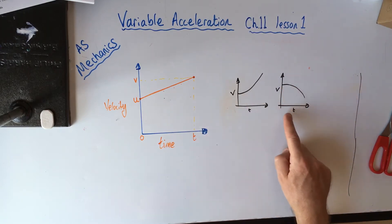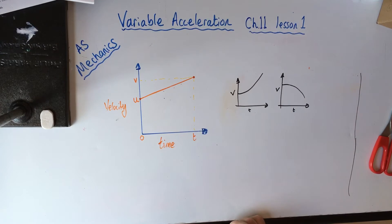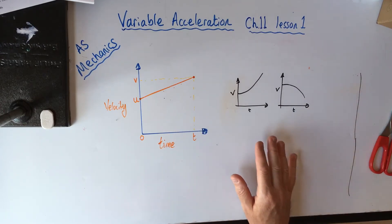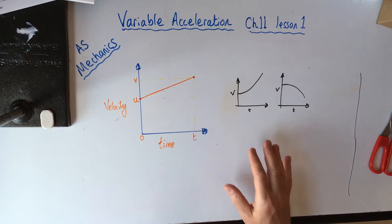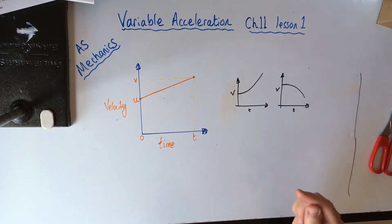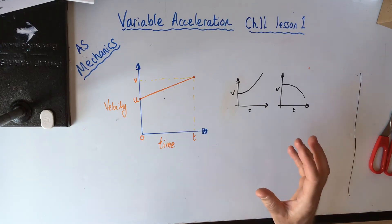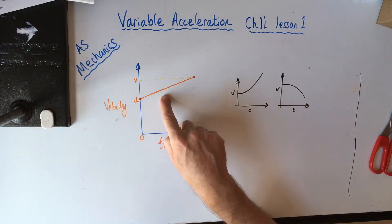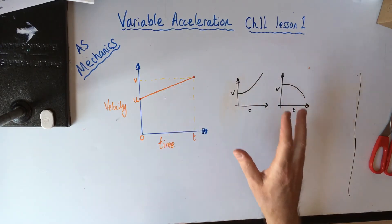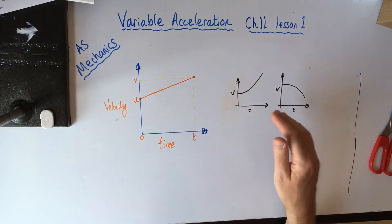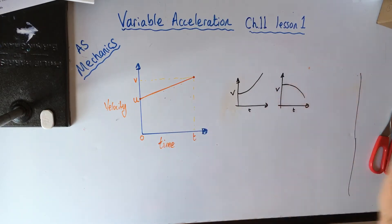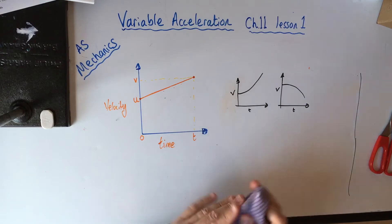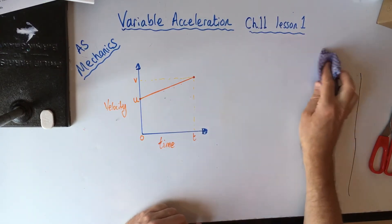We're going to get velocity-time graphs that look like curves. The principles of how we switch between displacement, velocity, and acceleration are the same whether the functions are curved or straight lines. The only thing that's different is you can't use the SUVAT equations with variable acceleration.